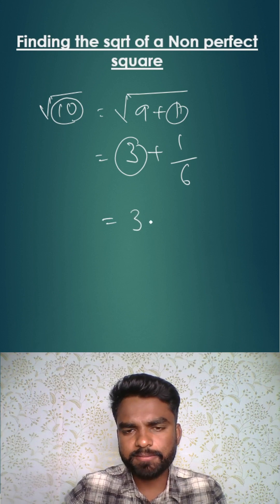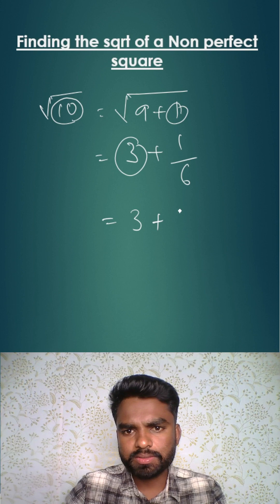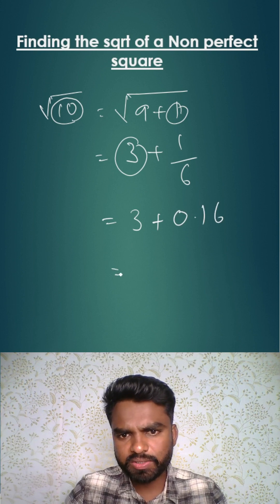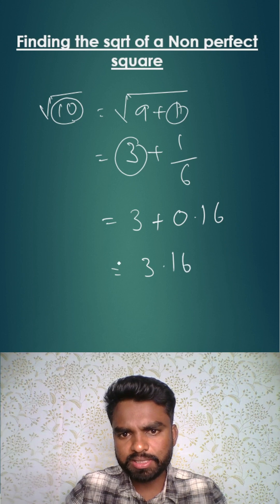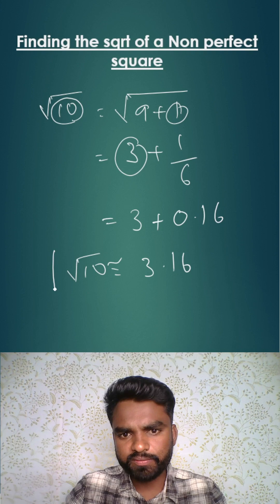So this is 3 plus 1 by 6, which is 3 plus 0.16. When you add these things you'll get 3.16 as your answer. This is almost equal to the value of square root of 10.